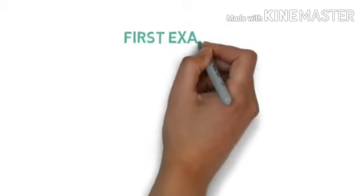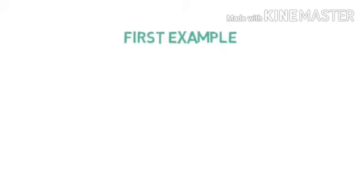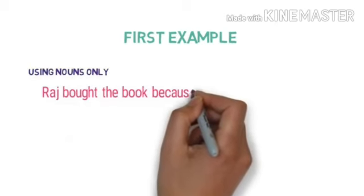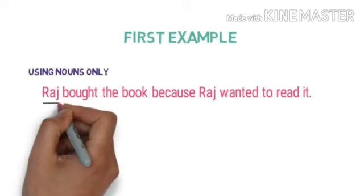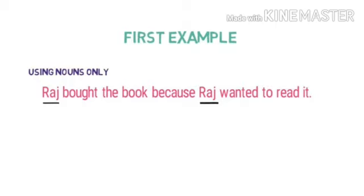Let's look into the example. In the first sentence we will use only noun. In the second sentence we will use noun and pronoun. So, here is the first example using noun only. Raj bought the book because Raj wanted to read it.